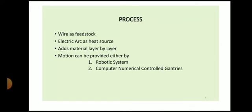Again, understanding the WAAM process in detail: it uses the wire as a feedstock, so the material is in the form of wire, and electric arc as a heat source using different welding processes to melt that wire. It adds the material layer by layer. The motion can be provided either by a robotic system or computer numerical control (CNC) gantries — either you can use a robot to deposit the material, or you can modify an existing CNC machine, attach the welding torch, and use the motion along X, Y and Z axis to deposit the material.